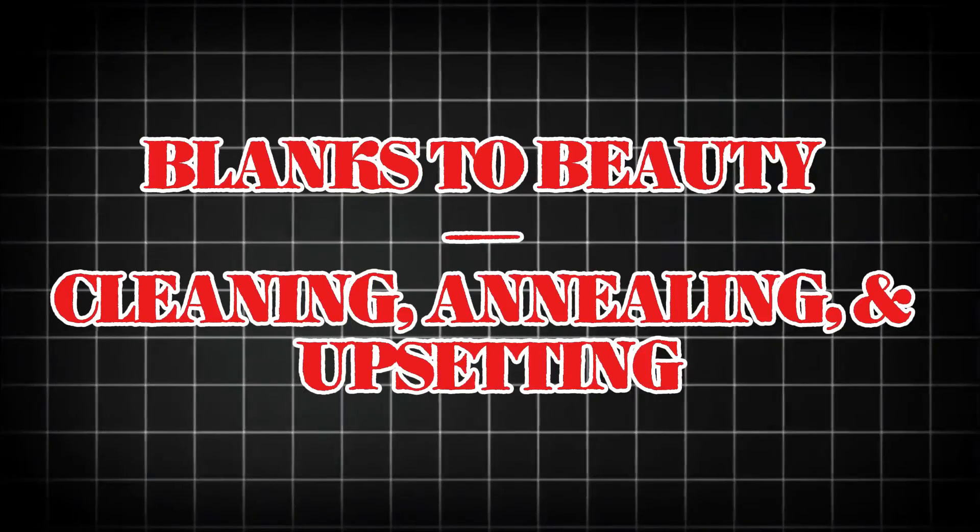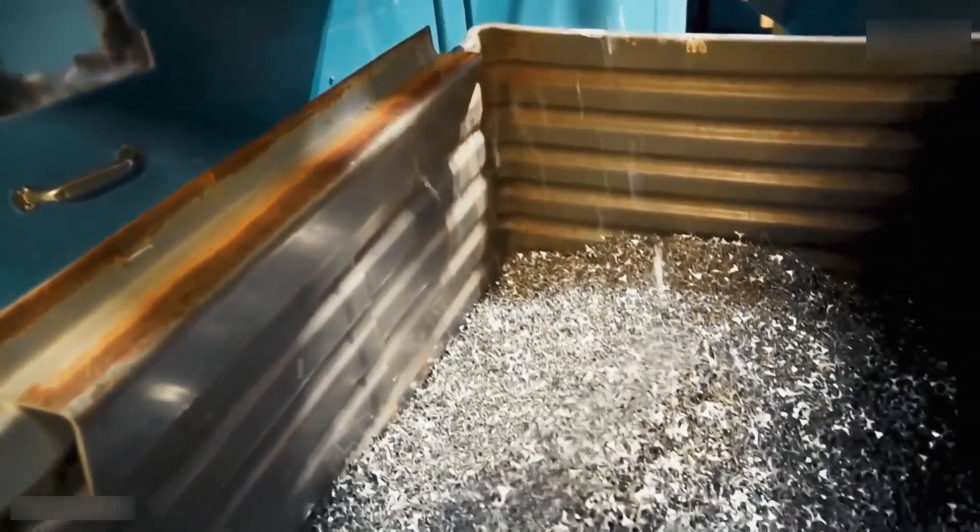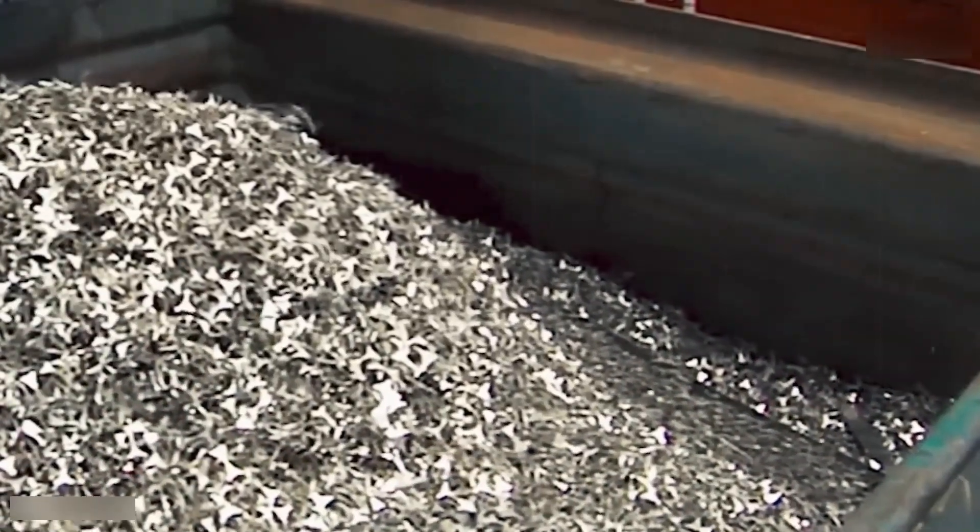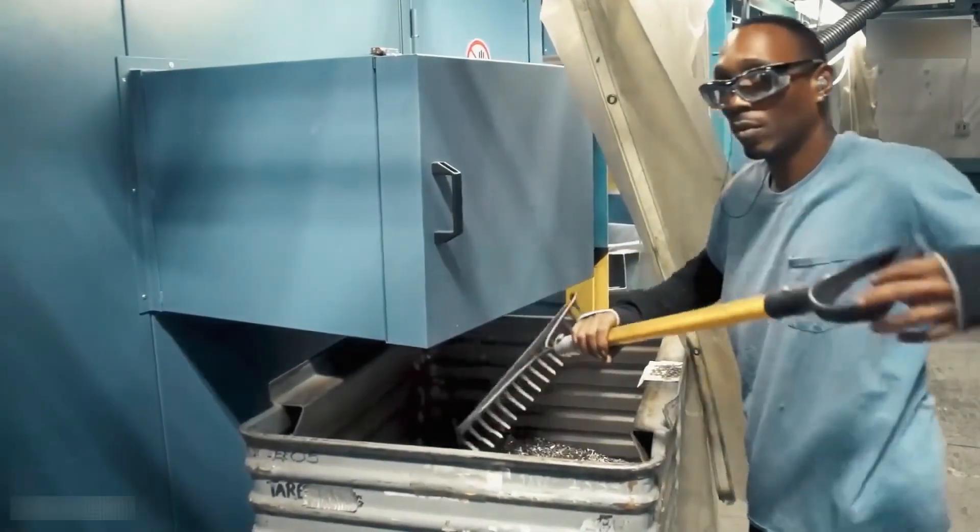From blanks to beauty: cleaning, annealing, and upsetting. Once the blanks are cut, they go through processes even more fascinating than their creation. Cleaning and tumbling: these discs get tumbled in industrial cleaners, think of a giant washing machine for coins, to make sure each blank is pristine, free of grit or oil.